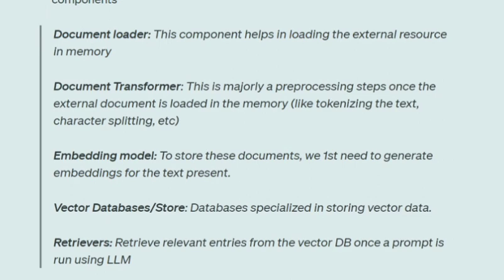The third component is an embedding model, which generates embeddings for the text or document that you have loaded and transformed. This is necessary because LLMs — and any ML model — cannot interact directly with raw text, so you need to generate an embedding representation.